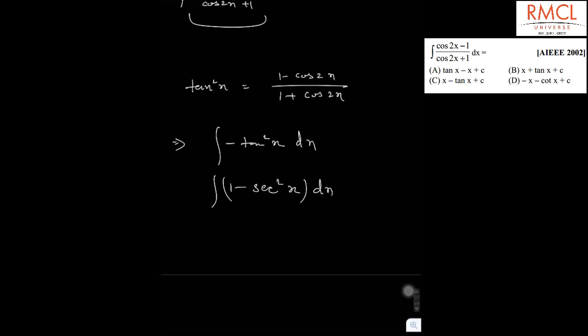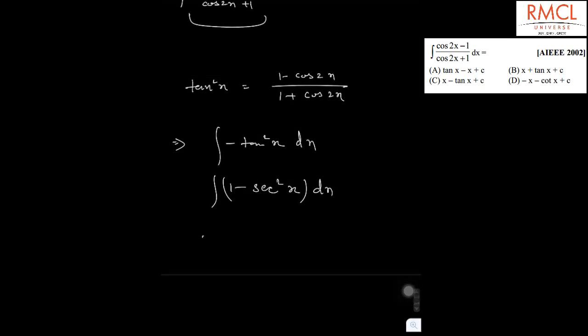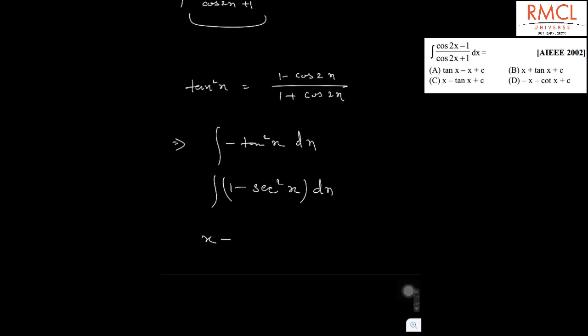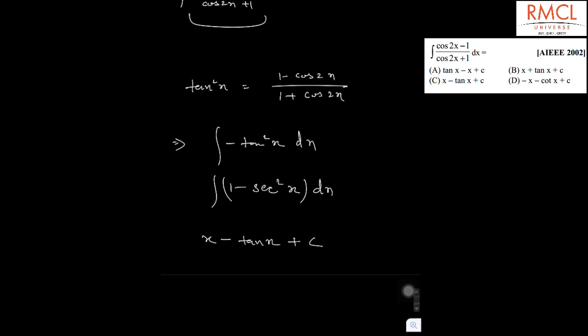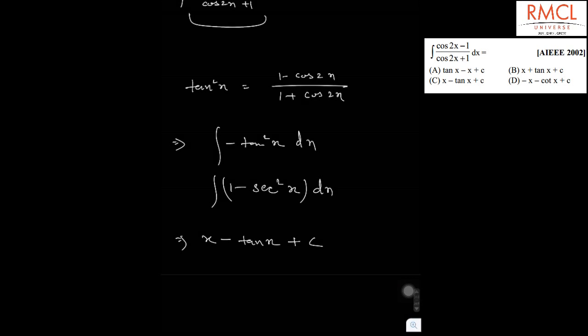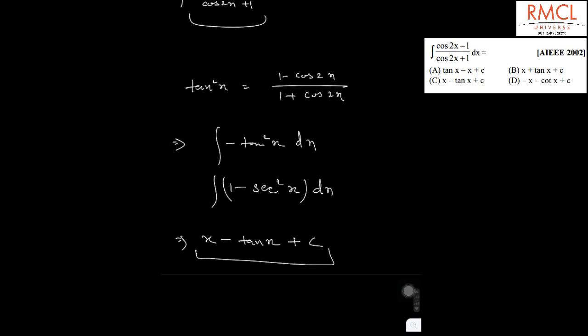The integration of 1 is x and the integration of sec²x is tan x. As it is indefinite integration, we add c. So the answer is x - tan x + c. Therefore, the correct option is option c.